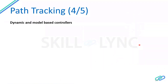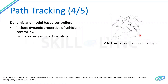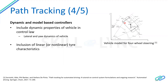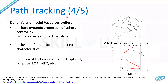Beyond geometric and kinematic controllers, we can have controllers based on the vehicle model or dynamic properties of the vehicle. This means including yaw rate — which explains how fast the vehicle is rotating around its axis — lateral acceleration, sideslip angle of the vehicle and tires, to come up with control actions. You can also include linear or non-linear tire characteristics and see how they can be used for the control action.